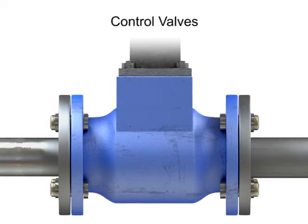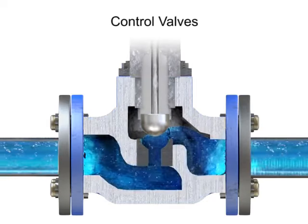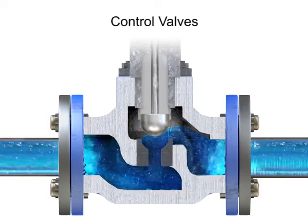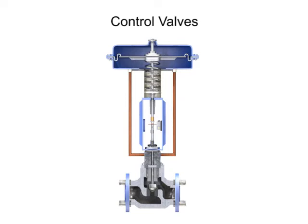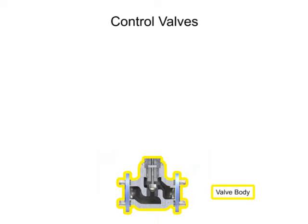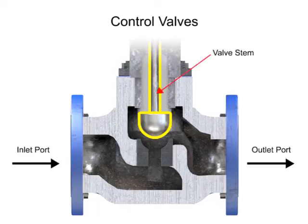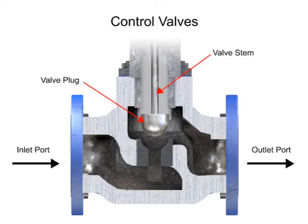Control valve actuators control fluid in a pipe by varying the orifice size through which the fluid flows. Control valves contain two major components: the valve body and the valve actuator. The valve body provides the fluid connections and a movable restrictor, comprised of a valve stem and plug that is in contact with the fluid that varies the flow. The valve actuator is the component that physically moves the restrictor to vary the fluid flow.